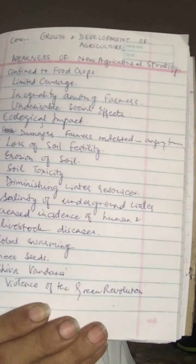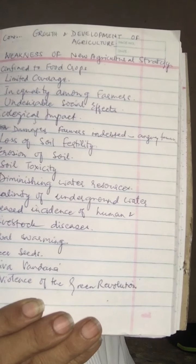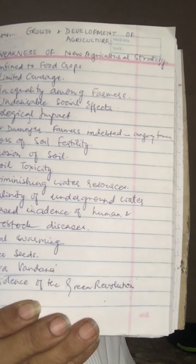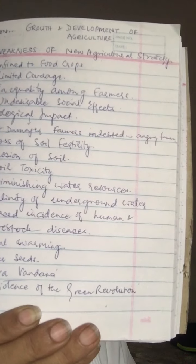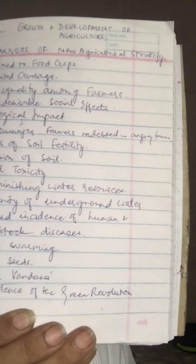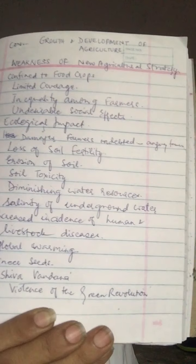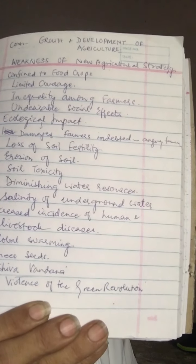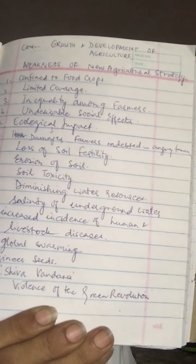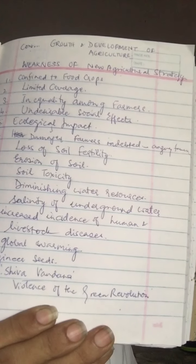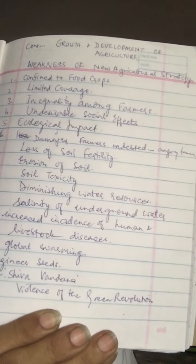Another weakness was the undesirable social effects. The increasing use of farm machinery created a problem of surplus labor in the agricultural sector. So while employment was generated in some areas, surplus labor became a significant issue.